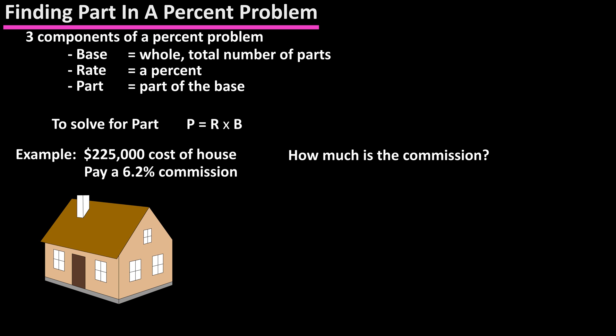In our formula, B (the base) is the total amount, which is $225,000. R (the rate) is the percent, which is 6.2%. We need to solve for P (the part), which is the commission to be paid. So we have: part equals 6.2% times the base of $225,000.